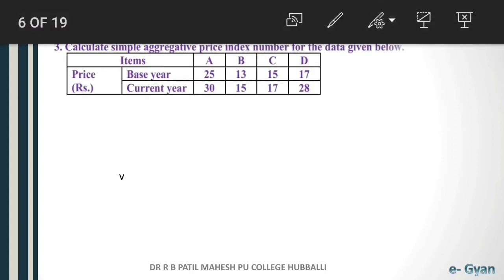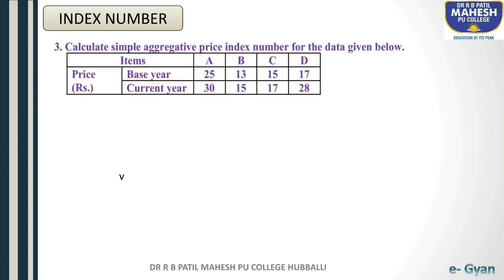Let us take the first example. Calculate simple aggregative price index number for the data given below. In the first column, items are given: A, B, C, D, along with the price of the base year as well as the current year. For this question, we have to find out the simple aggregative price index number.